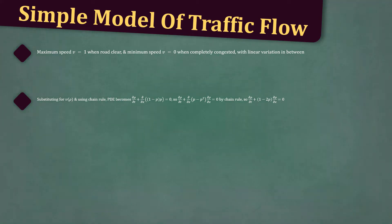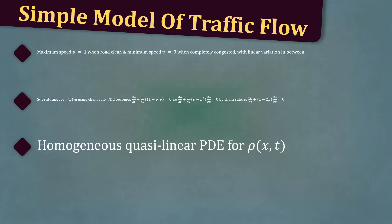Therefore, ∂ρ/∂t + (1 - 2ρ)∂ρ/∂x = 0. We thus have a homogeneous quasilinear PDE for ρ(x,t).